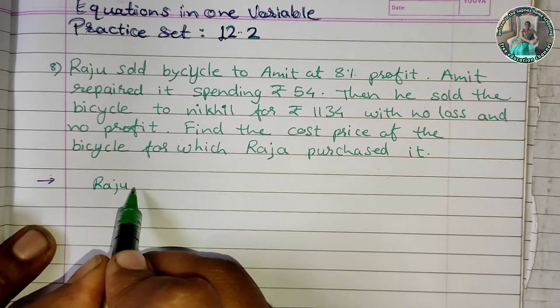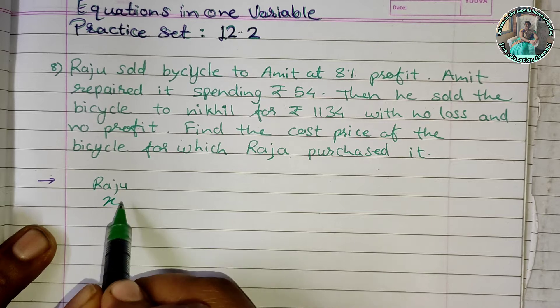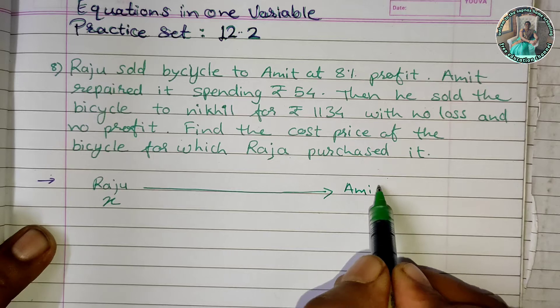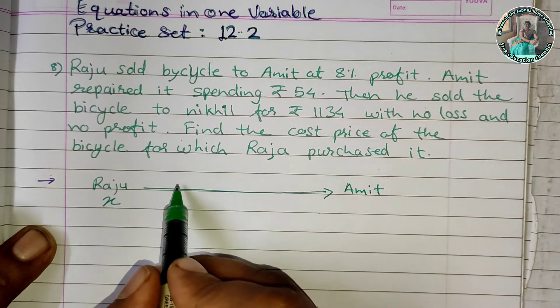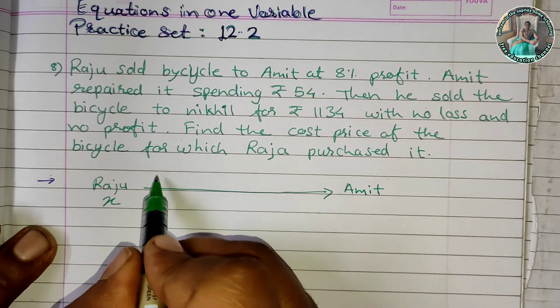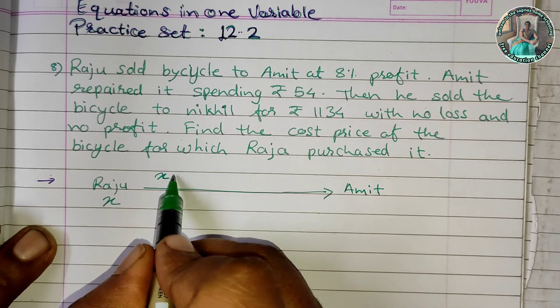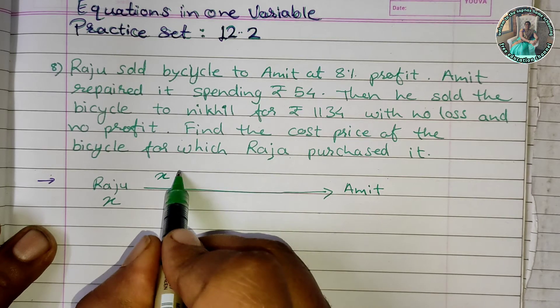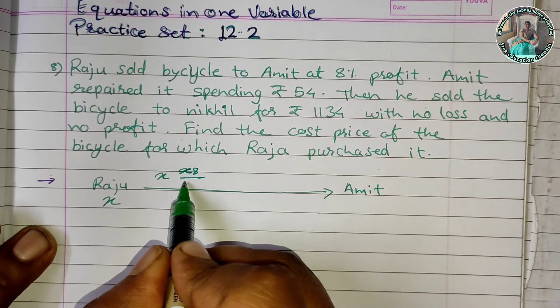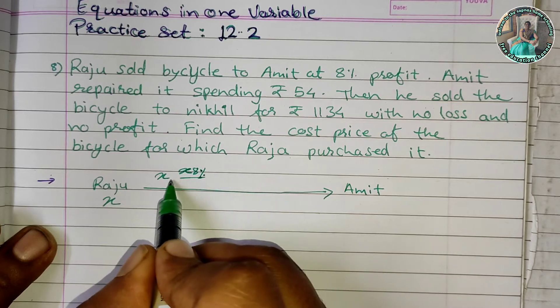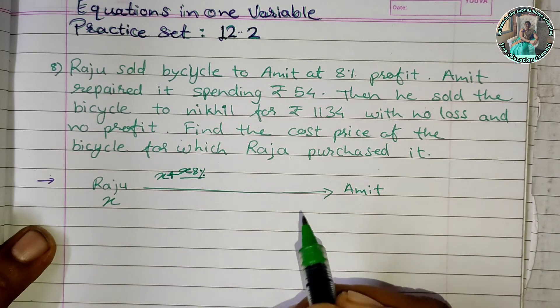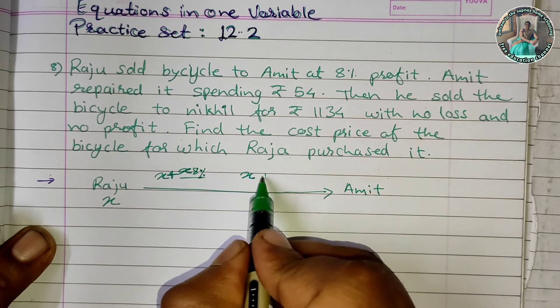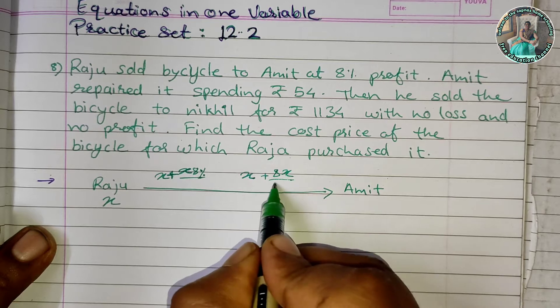Raju sold the bicycle to Amit. When selling to Amit, he made 8% profit. So the purchasing cost for Amit is x plus 8% on x, which equals x plus 8x upon 100.